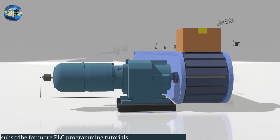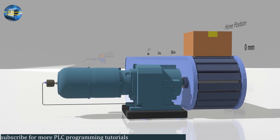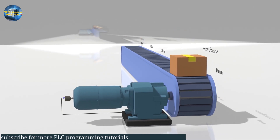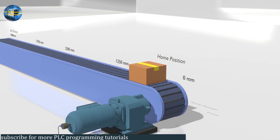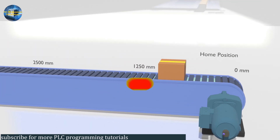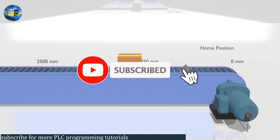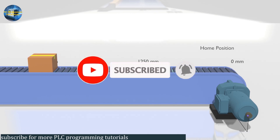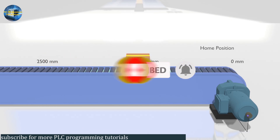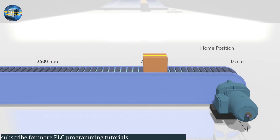So this is how we can control a conveyor belt and measure the distance traveled by the conveyor belt. I hope you liked today's tutorial. Do share, like, and subscribe to my channel and press the bell icon for more upcoming video tutorials. Till next time, take care.